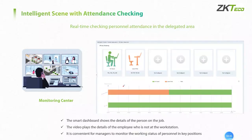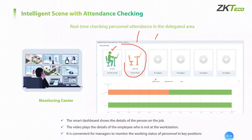The next application is attendance tracking monitoring. It is more suitable for some important positions with a small number of staff, and camera installation requirements are relatively high — the camera must be able to recognize the head and shoulders, meaning one camera can only monitor one post. If the camera recognizes that there is no one at the position, the dashboard will turn yellow in about one minute, indicating that the position is vacant and displaying the departure time. This is very convenient for managers to monitor the working status of personnel at key positions.